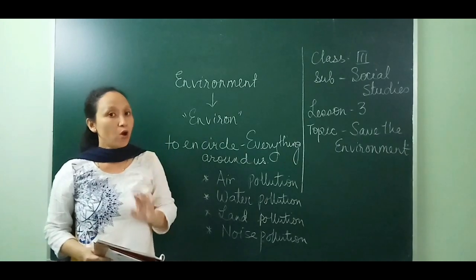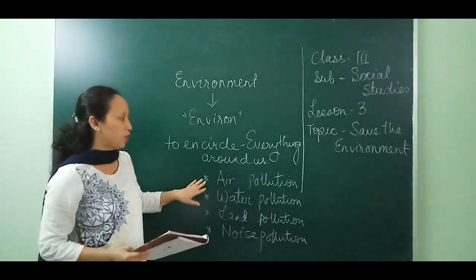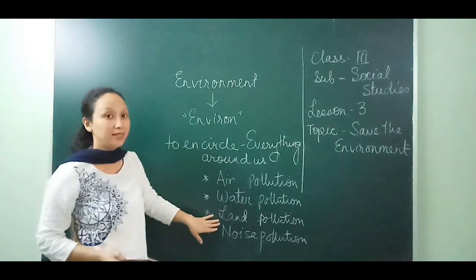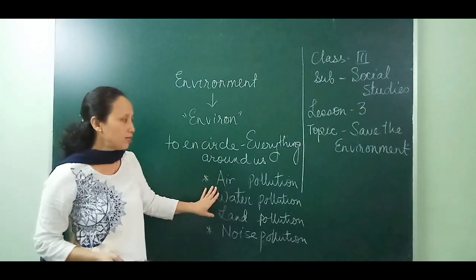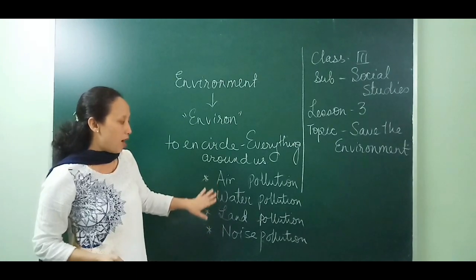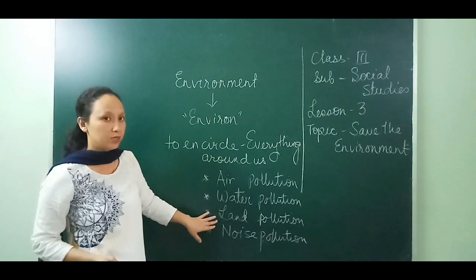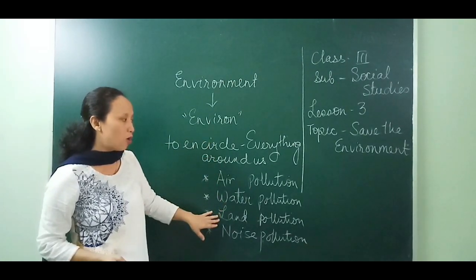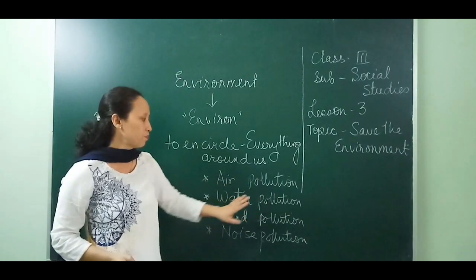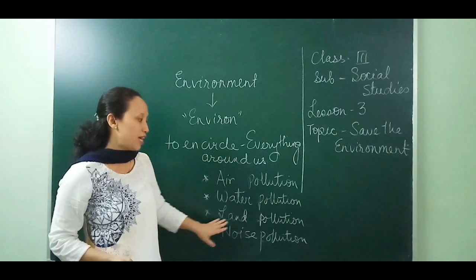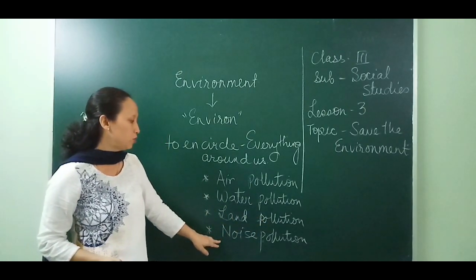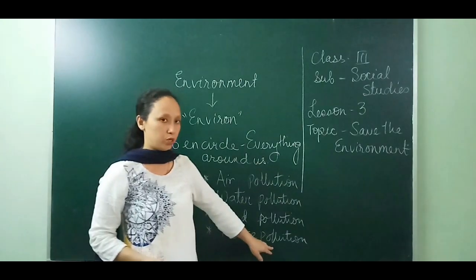If we look at the abiotic components — not the biotic but the abiotic — we see the air, water, and land. These are non-living things. So air, water, and land are the abiotic components of the environment. We will have air pollution, water pollution, land pollution, and the fourth type of pollution added to the list is noise pollution.